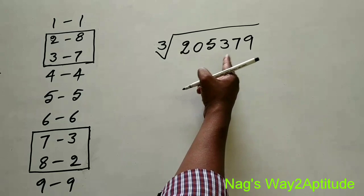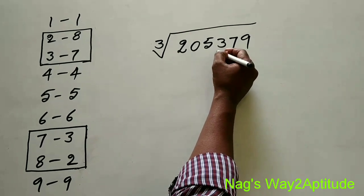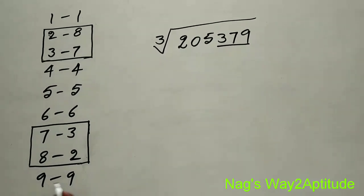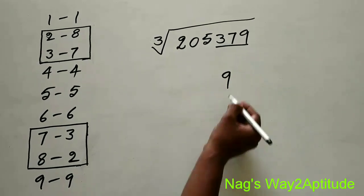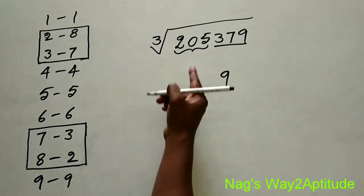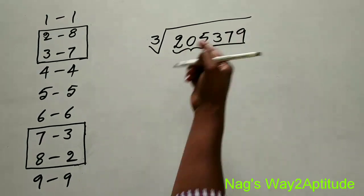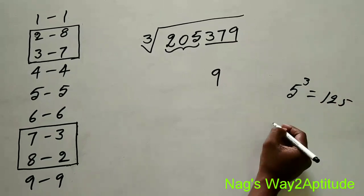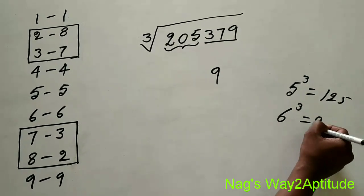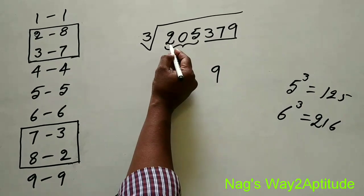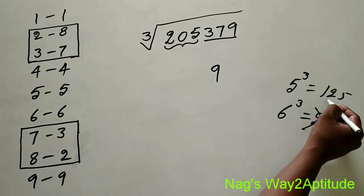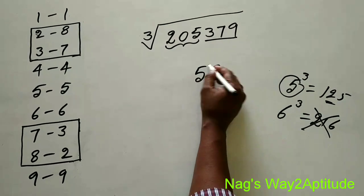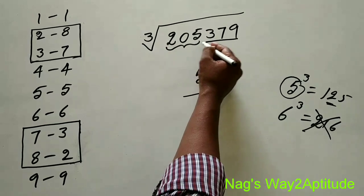Let's find the cube root of 205,379. Take the last 3 digits: 379. The last digit is 9 — since cube of 9 ends in 9, the units digit is 9. Now take the remaining digits: 205. The nearest cube not over 205 — 5 cubed is 125, and 6 cubed is 216 which is over 205. So we take 5. Therefore the cube root of 205,379 is 59.